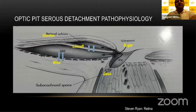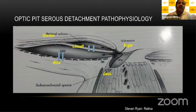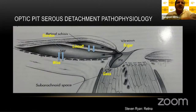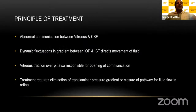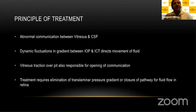Various theories have been proposed for the pathophysiology, but the most accepted theory today is that vitreous fluid enters the pit and causes inner layer schisis, and from the inner layer schisis the fluid seeps into the outer layers, causing outer retinal detachment. This theory forms the basis of treatment. The principle is that there is an abnormal communication between the vitreous and the cerebrospinal fluid, with dynamic fluctuation in the gradient between intraocular pressure and intracranial tension directing fluid movement. Vitreous traction over the pit also opens this communication, and treatment requires elimination of this translaminar pressure gradient or closure of the pathway for fluid flow into the retina.